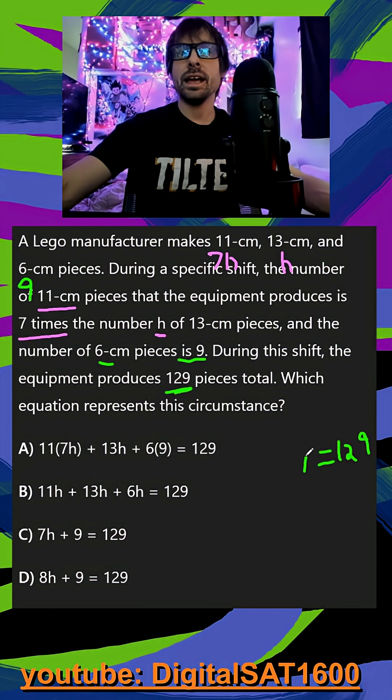We know that we've already made 9 6 centimeter pieces, and then we've made H 13 and 7H 11. So that would just be 8H plus 9.